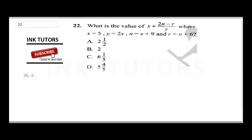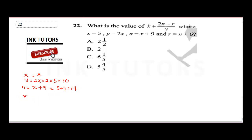x is 5. y is 2x, which is 2 times 5, which is 10. n equals x plus 9, which is 5 plus 9, that's 14. r equals n plus 6, which is 14 plus 6, that's 20. Once you have all of these, you can put them into the equation.